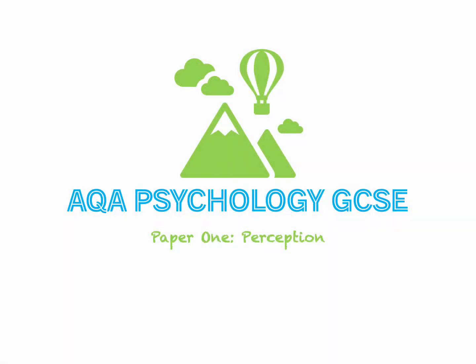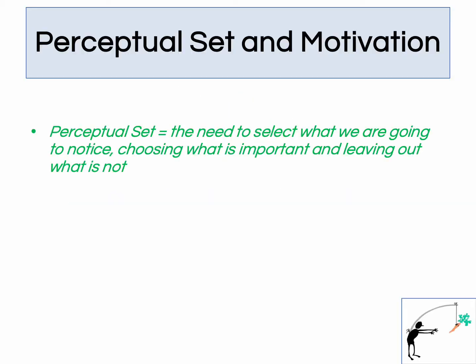This is an AQA Psychology GCSE revision video for the Paper 1 topic of Perception, with a specific focus on Perceptual Set and Motivation, the Gilchrist and Nesberg Key Study. Perceptual Set is the need to select what we're going to notice — choosing what is important and leaving out what is not — because every day we are bombarded with lots of sensory information that we have to perceive every second of the day.